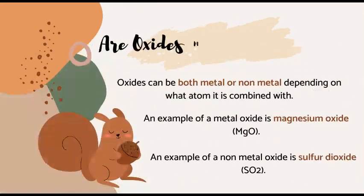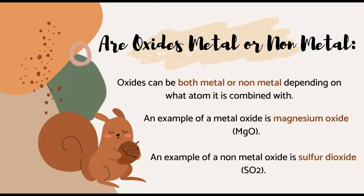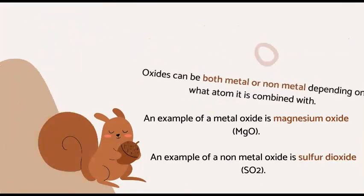Are oxides metal or non-metal? Oxides can be both metal or non-metal, depending on what atom it is combined with. An example of a metal oxide is magnesium oxide. An example of a non-metal oxide would be sulfur dioxide.